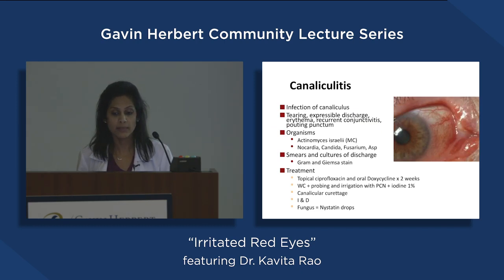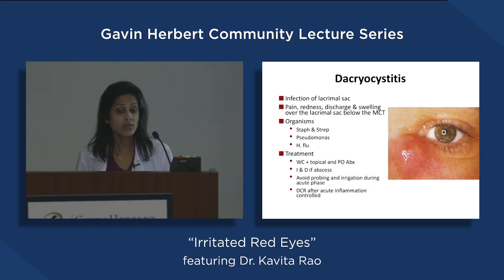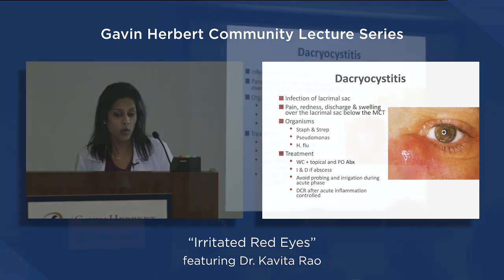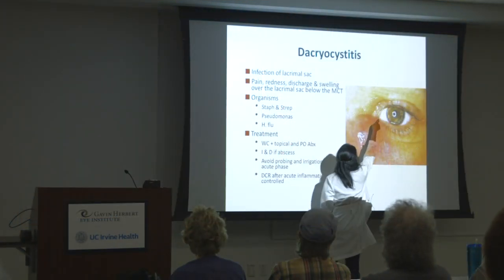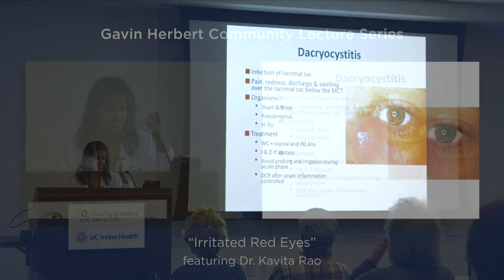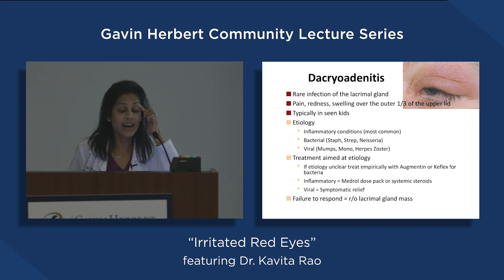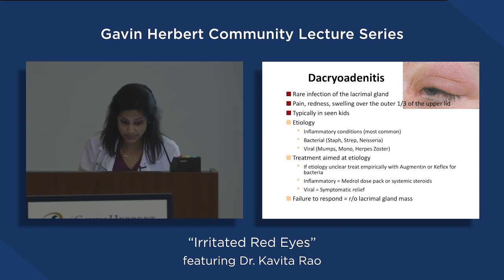Canaliculitis is part of the drainage system by the nose. If that gets infected — from viruses or bacteria — people can get a gunky discharge, and we treat it with antibiotics. Dacryocystitis involves blockage of the nasolacrimal duct system where tears drain; the duct can get plugged, red, and inflamed, and we might need to make a small incision if there's an abscess. Dacryoadenitis, usually seen more in kids, involves a gland near the eyebrow that helps make tears — it can get inflamed and infected and cause a red eye.